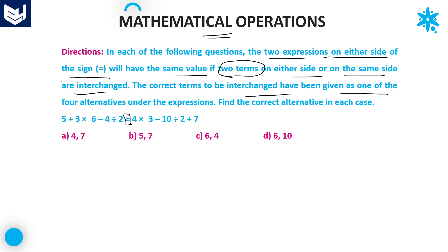Let's see the first option: 4 and 7 are to be interchanged. If 4 and 7 are interchanged, then 4 is replaced with 7 and 7 is replaced with 4. There is no changing of signs — signs changing is not mentioned in the given question. In the previous sessions we discussed about both sign changes and number changes, but here only number changes are there.